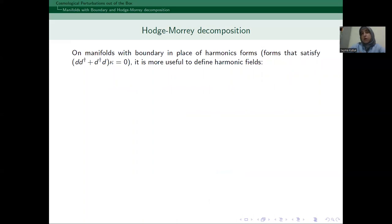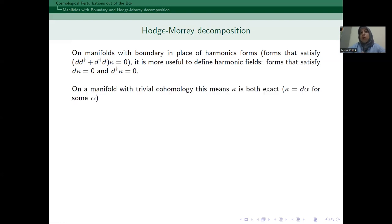So, let me now describe Hodge-Morrey decomposition. First, I need to discuss harmonic forms and harmonic fields. Now, on manifolds with boundary in place of what is known as harmonic forms, forms that satisfy the Laplace equation, it is more useful to define harmonic fields. So, these are forms that satisfy d kappa equals zero and d dagger kappa equals zero. And if we also have a manifold with trivial cohomology, then this means that the harmonic field is both exact and coexact. This is except for rank zero and for that case kappa is simply a constant.